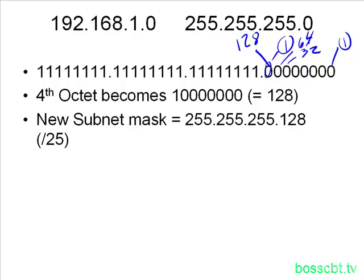Prefix notation is simply counting the number of consecutive ones. In the first octet we had 8, 8 in the second, 8 in the third, and then we created 1 in the fourth. So 8 plus 8 plus 8 plus 1 equals 25, and that's how we get the /25 prefix notation.